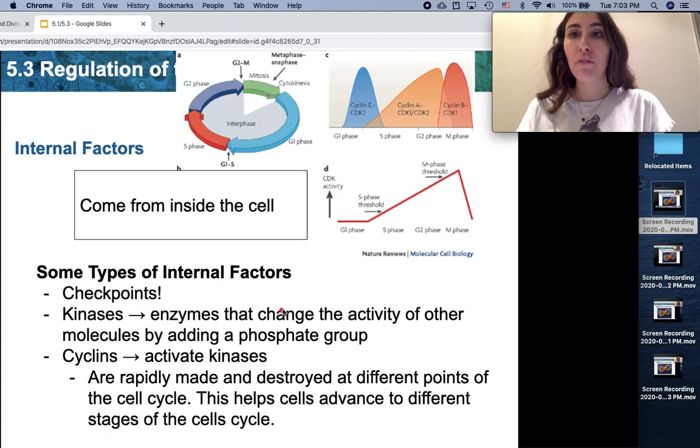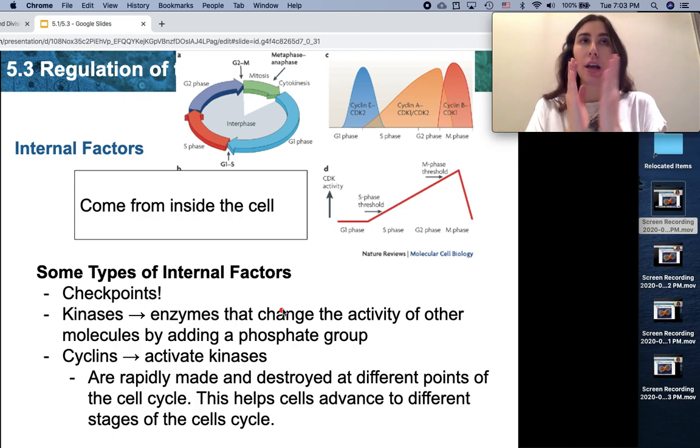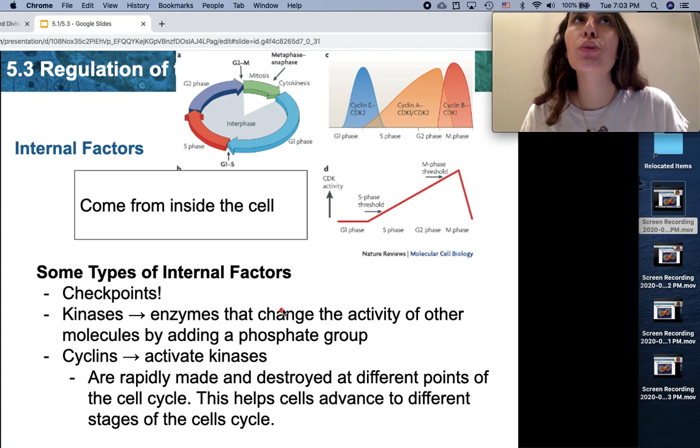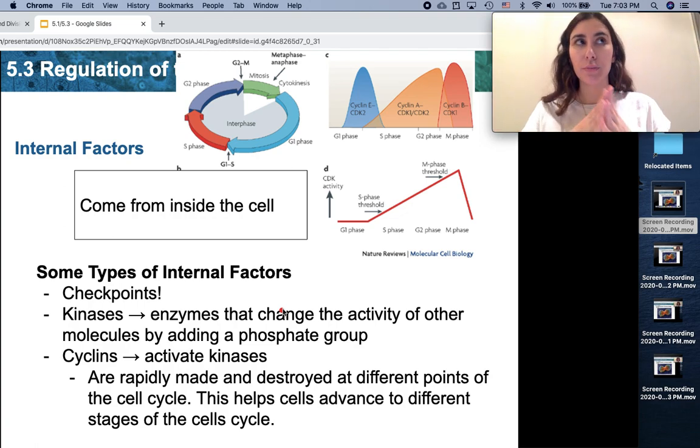The next type of factors that regulate the cell cycle are internal factors. Just like their name suggests, internal factors come from inside within the cell. When you go to the airport, there are several checkpoints. You can't just waltz into your plane without going through any checkpoints. There are several different checkpoints that you have to go through. Your bags have to be scanned, your passport has to be checked.